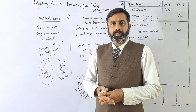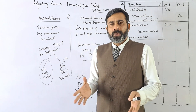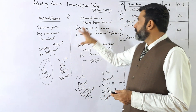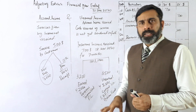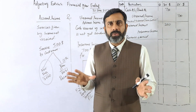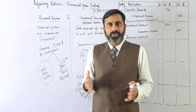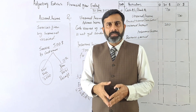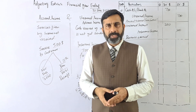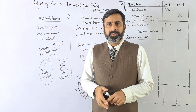If you prepare the account, it was credited by $700 and divided by $200, leaving a balance of $500 on the credit side — which is the liability. I hope you have understood the concept of unearned income. If you have any questions, you can ask in the comments section. Thank you very much.